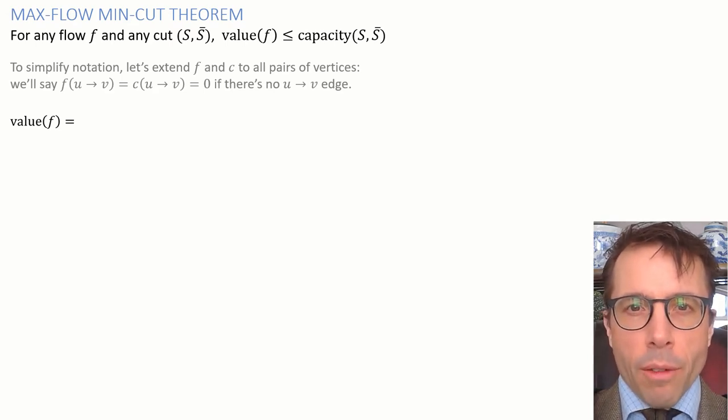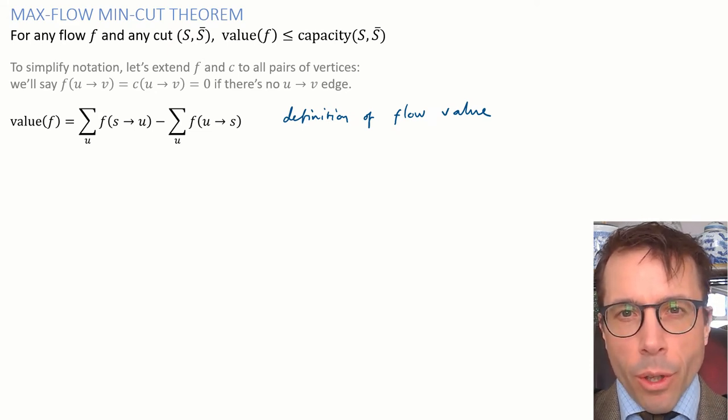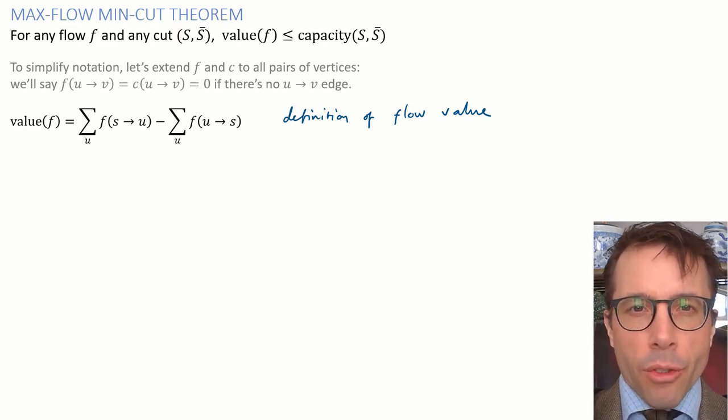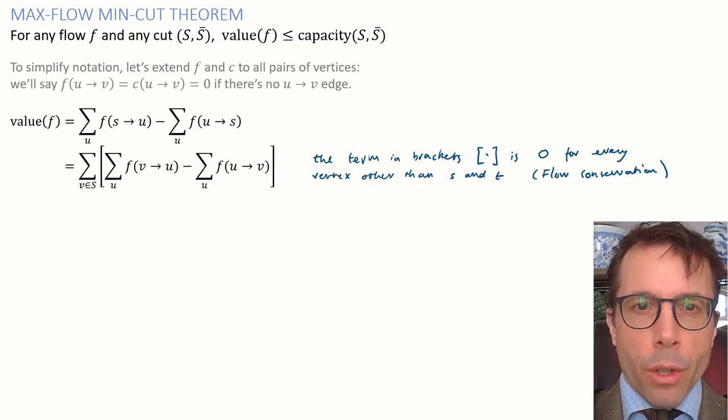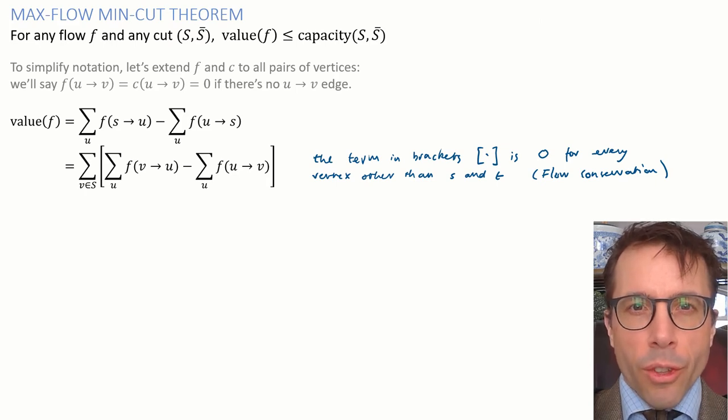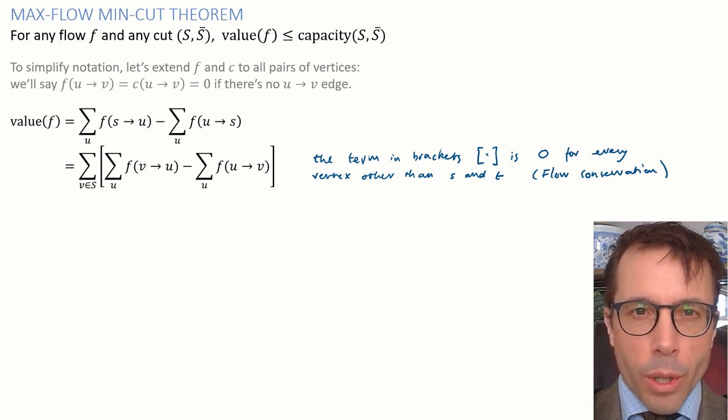The theorem makes a claim about flow value. Let's start by writing out a definition. The flow value is the net flow out of s, the sum of all outgoing flows from s minus the sum of all incoming flows. And because of this handy notation, we can just write both terms as a plain sum over all vertices u. Next, this is where we use flow conservation. This term in square brackets is equal to zero for every vertex other than the source and the sink. That's just the literal definition of flow conservation. So if I add up a copy of this term in square brackets for every vertex in the set S, the only vertex that counts is the source vertex, v equals little s. So that's why it's equal to the preceding line.